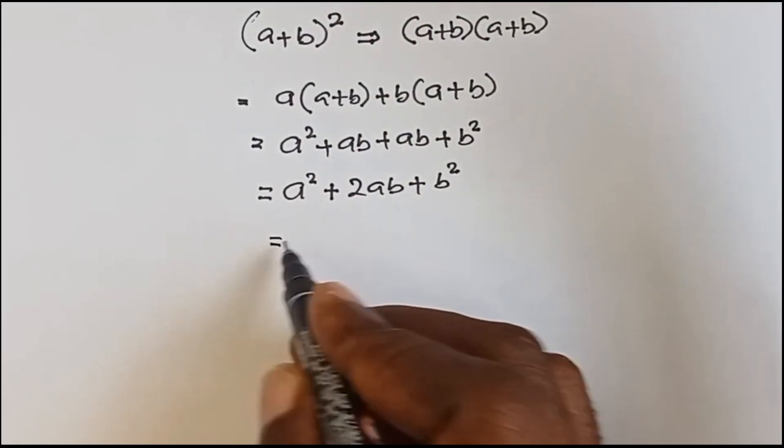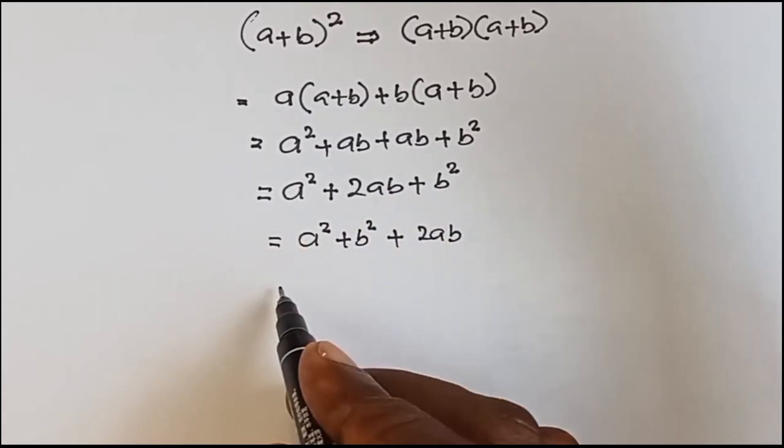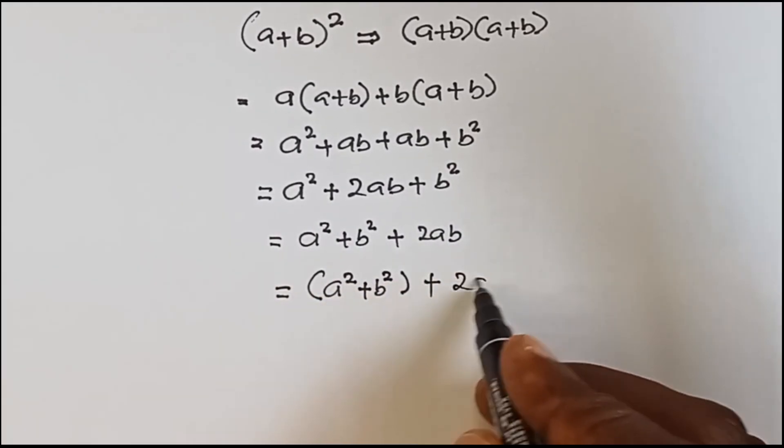We're going to do a² plus b², you put them together plus 2ab. And then this can also be put in a bracket and it's a² + b² plus 2ab.